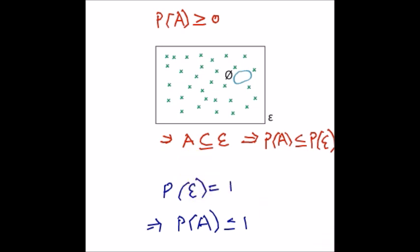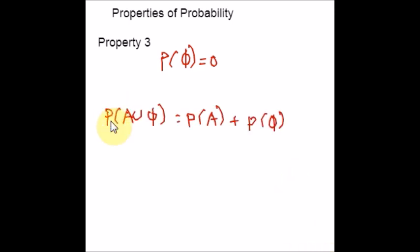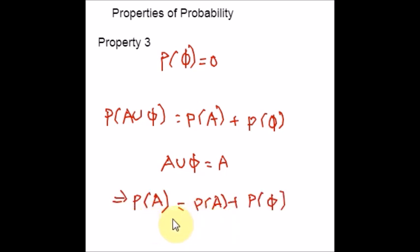Property number 3 says the probability of the empty set is equal to 0. Choose any event A. Then A and the empty set are mutually exclusive. By axiom 3, P(A ∪ ∅) = P(A) + P(∅). Since A ∪ ∅ = A, subtracting P(A) from both sides gives P(∅) = 0. It would be strange if the probability of an empty set were anything other than 0, and this confirms it is not.